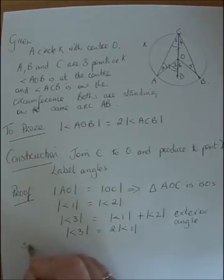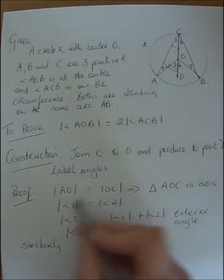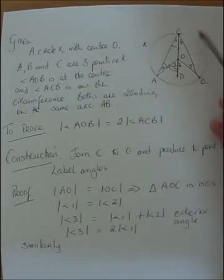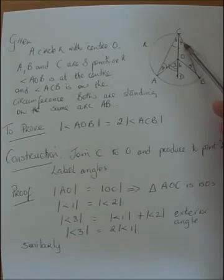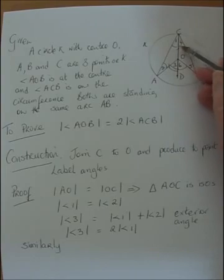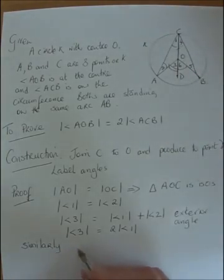Similarly, triangle COB is also isosceles, with angles 4 and 5 equal. So I can say angle 6 is double the measure of angle 4.